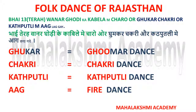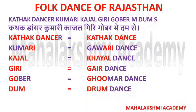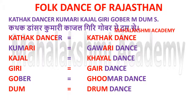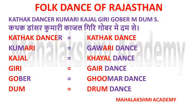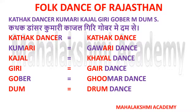Another short trick is also there to help you remember the next set of dances. The trick is: katak dancer kumari kajal giri gobar mein dhamse. So imagine a katak dancer named Kumari Kajal who fell into the gobar dhamse. Learn this short code and it will help you remember another set of dances performed in Rajasthan.